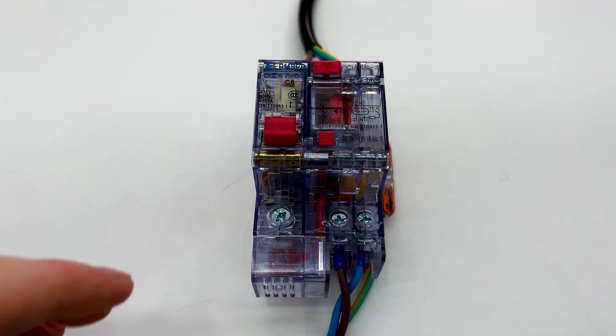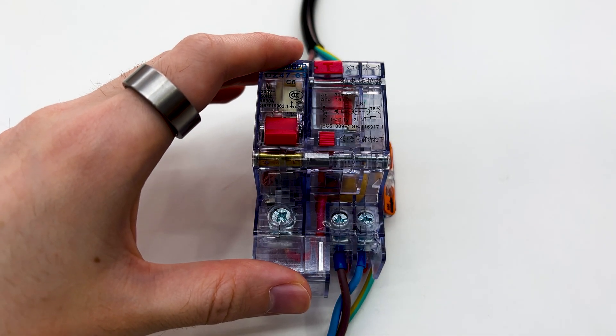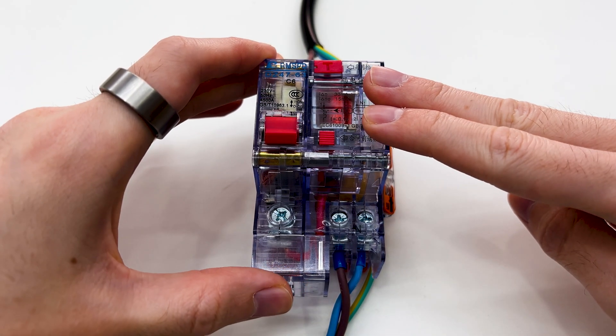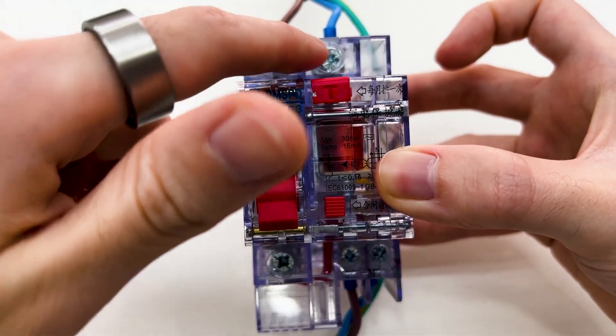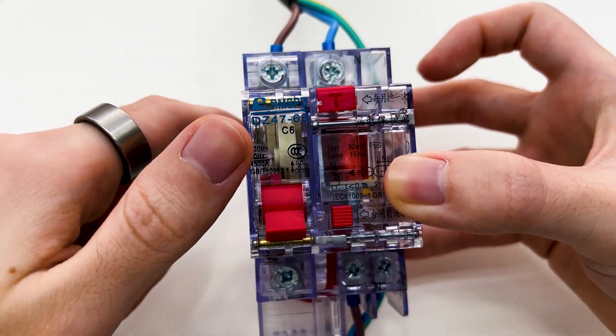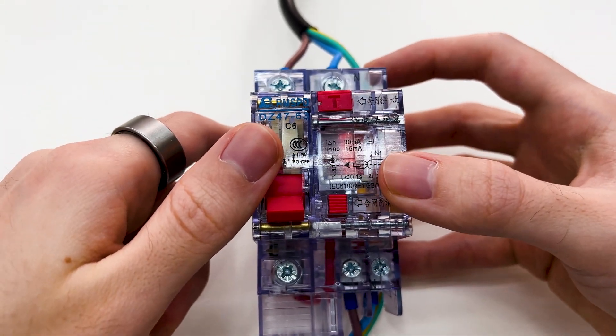This device is made from two parts. On the left side we have a breaker, and on the right side we have GFCI. You can see that it is split into two parts, but those parts are connected. I will show you how later.